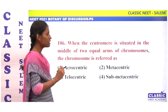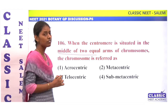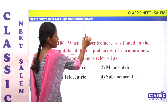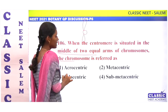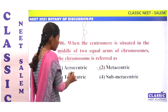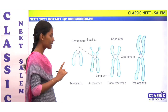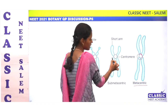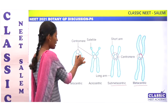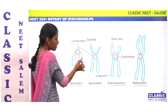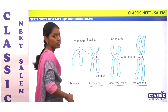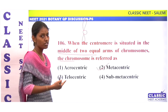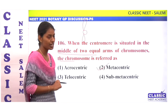When the centromere is situated in the middle of two equal arms of a chromosome, it is referred to as what? If the centromere is in the center, it is metacentric. If slightly away from center it is submetacentric; if terminal, it is telocentric; if slightly below terminal, it is acrocentric. Centromere in the middle of two equal arms — metacentric. Option 2.